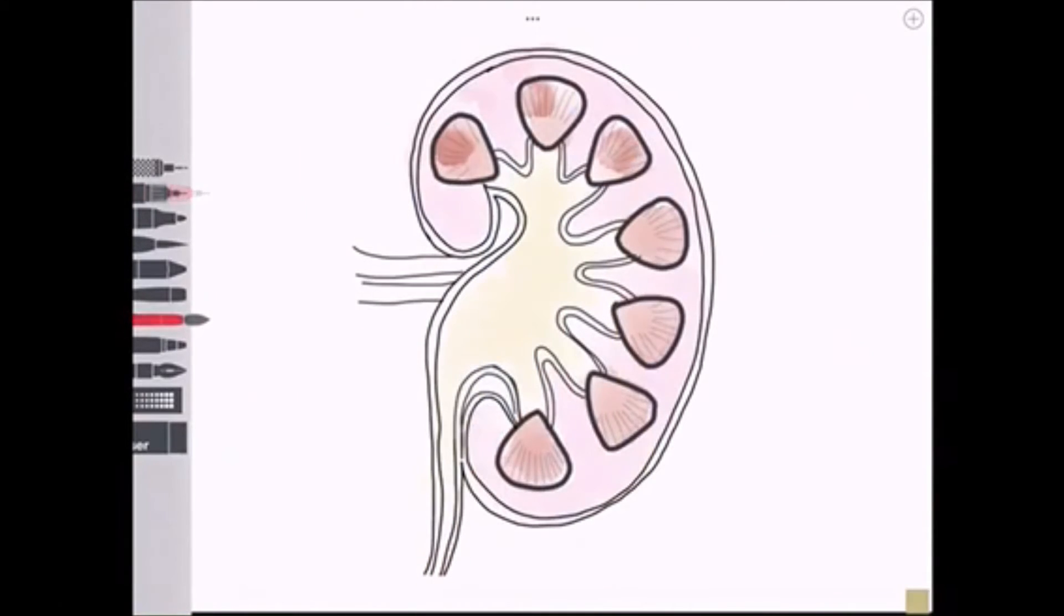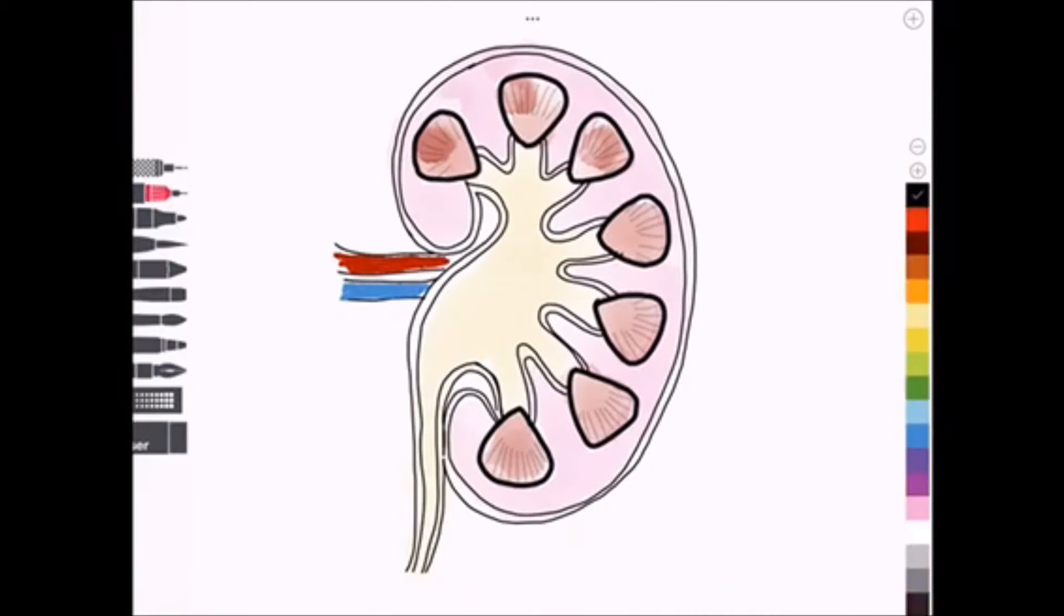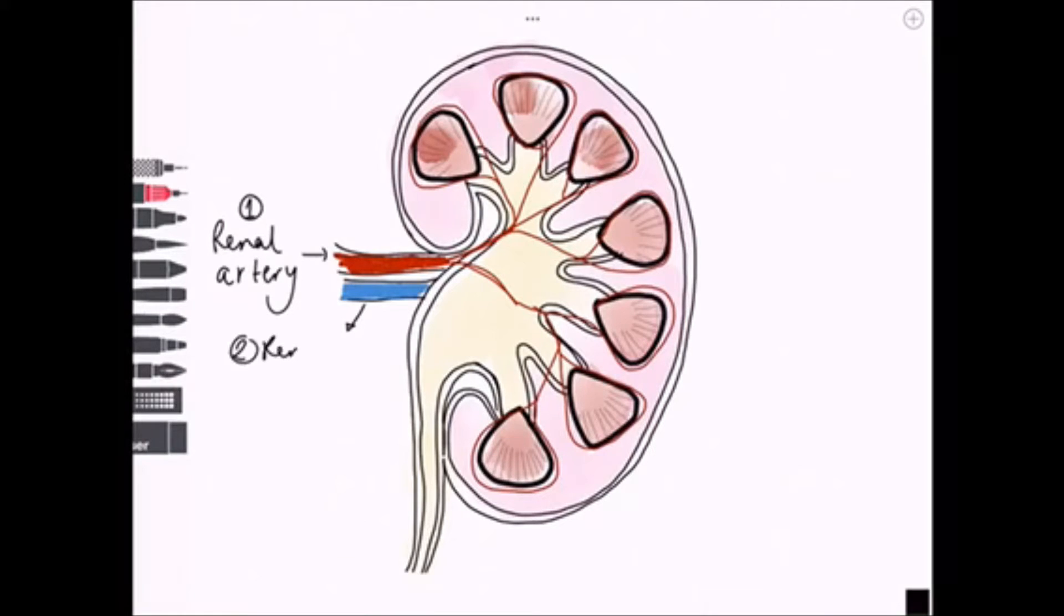So here I've drawn a cross-section of the kidney. You can see the renal artery entering the kidney at the hilum, and the renal vein and ureter leaving the kidney at the hilum.